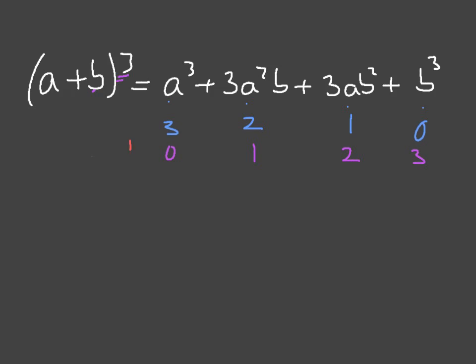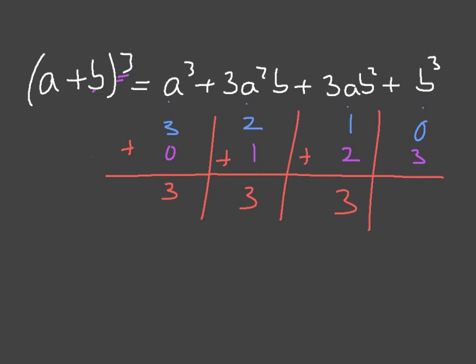A quick check to make sure you've got the powers right: the powers of a and b in any one term should always add up to the original exponent. For (a + b) cubed: first term, 3 + 0 = 3; second term, 2 + 1 = 3; third term, 1 + 2 = 3; last term, 0 + 3 = 3. You always get the power to which we raised (a + b) — a quick way to verify your expansion.